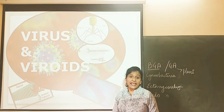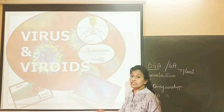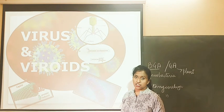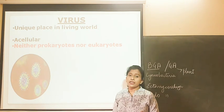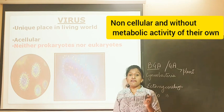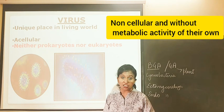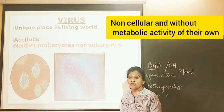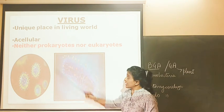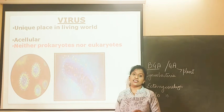The next topic is virus and viroids, which were not included in the five kingdom classification. Viruses have a unique place in the living world. They are acellular — they do not have proper cellular structure — and neither do they have any metabolic activity which they can carry out in the free state. They are neither prokaryotes nor eukaryotes.